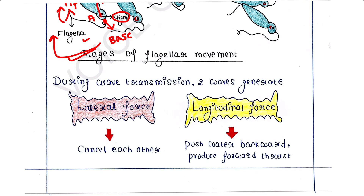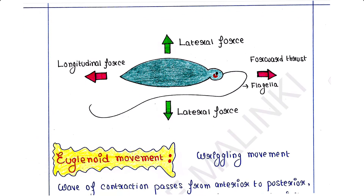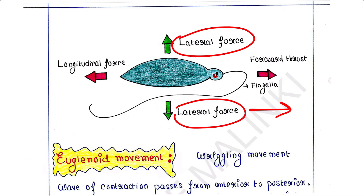During the transmission of waves from the base to the tip of the flagellum, two types of forces are generated: lateral forces and longitudinal forces. The lateral forces are generated in opposite directions to each other, therefore they cancel one another, and the Euglena will not move laterally.